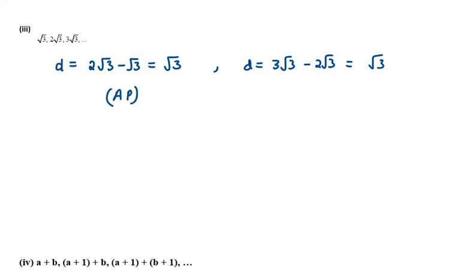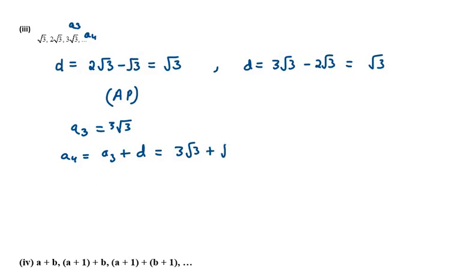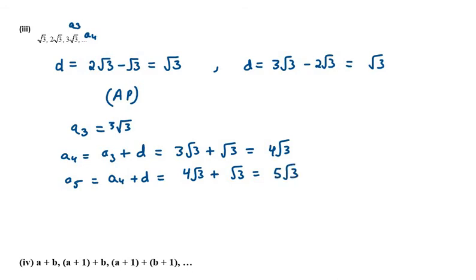Now we need to find the next terms — A4, A5, A6. We are given A3. A4 will be A3 plus D: A3 is 3√3 and D is √3, so we get 4√3. A5 will be A4 plus D: 4√3 plus √3 gives 5√3. You can clearly see there is a difference of √3 each time: 1√3, 2√3, 3√3, 4√3 and so on. For A6: A5 plus D gives 5√3 plus √3, which is 6√3. This is the answer for the third part.